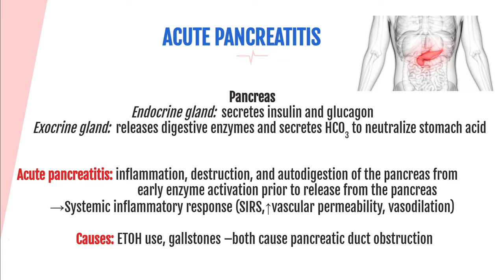In acute pancreatitis, there is diffuse inflammation, destruction, and autodigestion of the pancreas because digestive enzymes are activated prior to release from the pancreas. Those enzymes sit in the pancreas and begin digesting it away. This triggers a systemic inflammatory response (SIRS), which releases inflammatory mediators, increases vascular permeability causing capillary leak and fluid loss from the vascular space, and causes vasodilation.